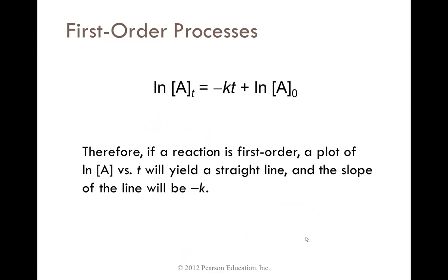Therefore, if a reaction is first order, a plot of ln of A versus time will yield a straight line, and the slope of the line will be negative k, or negative the rate constant.